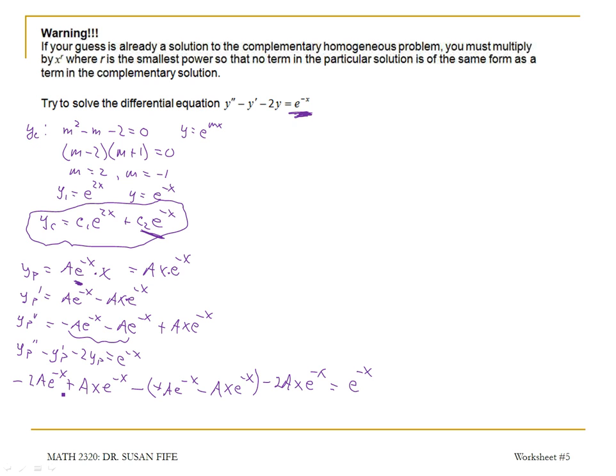So if I combine my like terms, here I have two different types of terms. I have AXE to the negative X. So I have an AXE to the negative X here. I have, this will be a minus, a negative, so that will make a positive AXE to the negative X here. Then I have a minus 2AXE to the negative X. These three terms cancel each other out.